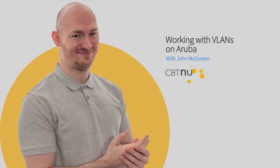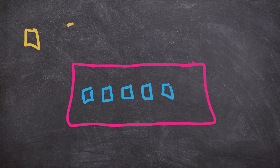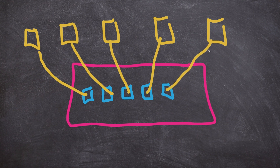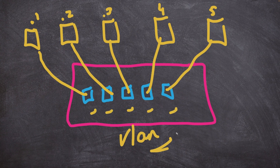Here's the plan: we have an Aruba switch and we're going to focus on five interfaces — interfaces one through five — with five PCs connected via ethernet cables. The IP addressing will be within the 192.168.10.0/24 range, with PCs configured as .1 through .5. We're going to wake up the default VLAN 1 by placing each interface into that VLAN, then do some testing to see how things shake out.